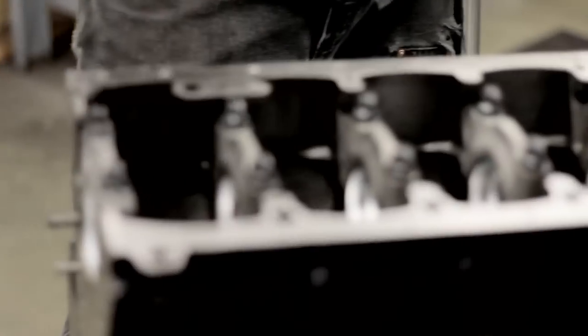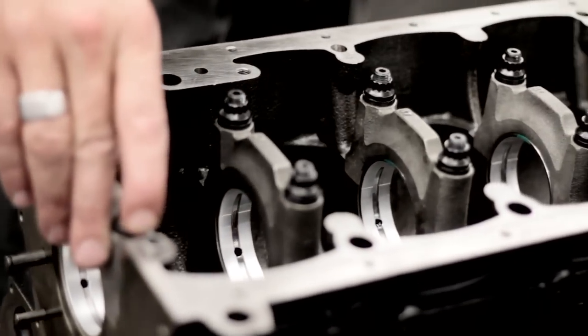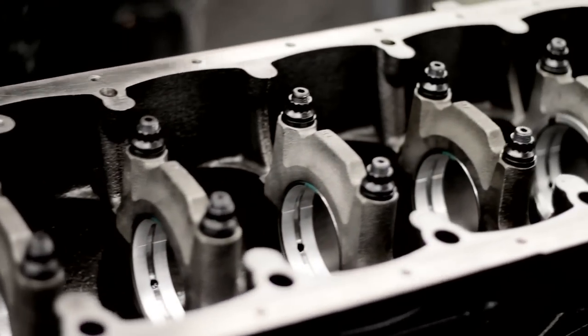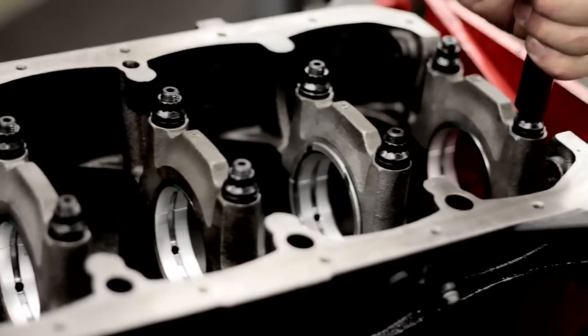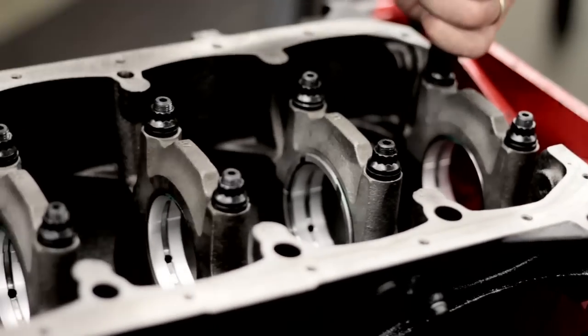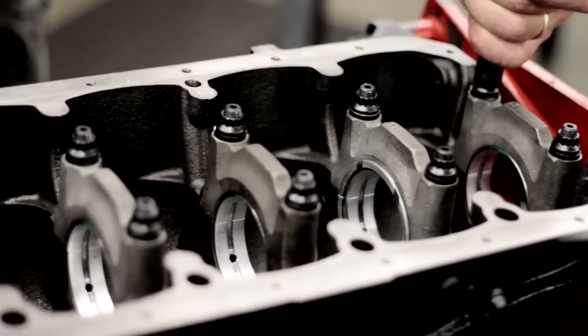Okay, we're back. We got the main bearings set in the block, we got the ARP mainline studs in. We're going to torque these nuts down which have ARP lube on them to 60 foot pounds, and then we're going to come in and bore gauge the bearing clearance.